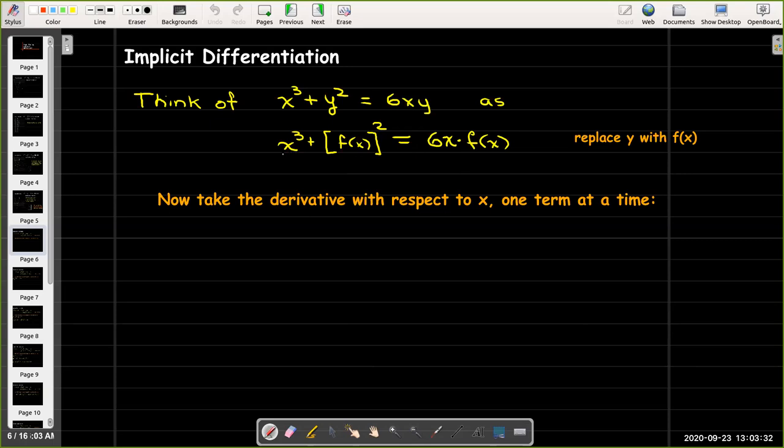We have three terms here: x cubed, and then quantity f(x) squared, and then on the right-hand side, we have the one term 6x times f(x). Taking the derivative of the first term is straightforward. Just use the power rule and you get 3x squared.